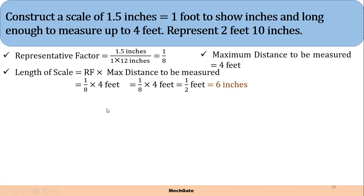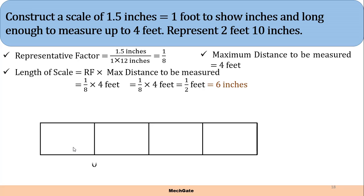In the next step, using scale let's draw a rectangle having length equivalent to 6 inches. So let's say this is my rectangle. Maximum distance to be measured is 4 feet, so I will divide this length into 4 equal parts. Since it is a 6 inch length, if we divide by 4 we will get 1.5 inches. So each division will be of 1.5 inches.